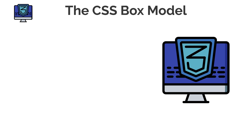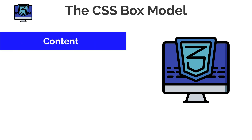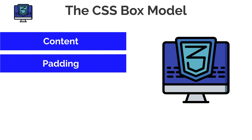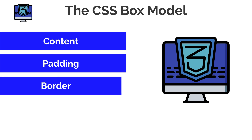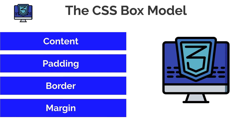Pretty much every element consists of the following: we have the actual content — so it could be a paragraph element, an h1, a div, whatever. Then we have the padding — remember, padding was inside. We had that acronym PMOL: padding inside, margin outside. Then we have the border, which goes around our content and padding, and finally we have margin, which goes outside of our border. So: content, padding, border, margin.